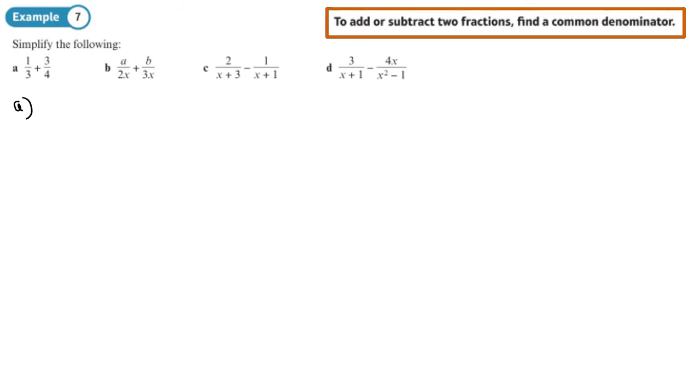So the 1 over 3 plus 3 quarters, I'll multiply both of those fractions at the top and the bottom, this one by 4, this one by 3, because there is no common factor with 3 and 4. So I get 4 over 12 plus 9 over 12. So I get a final answer of 13 over 12. I can leave it improper like that.